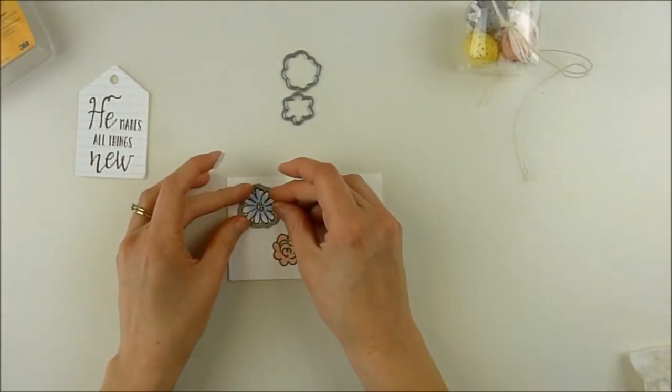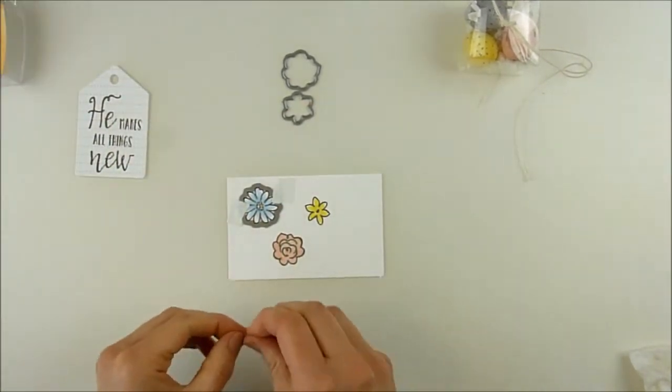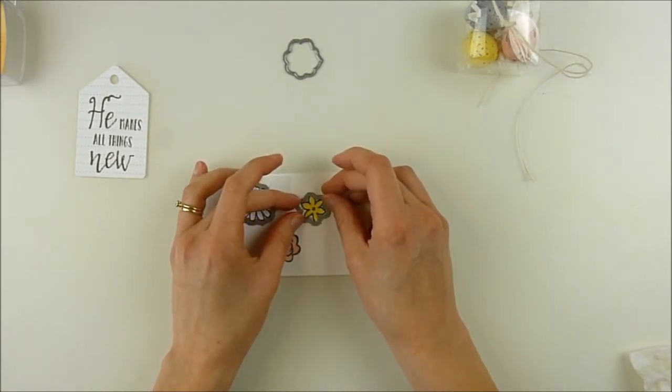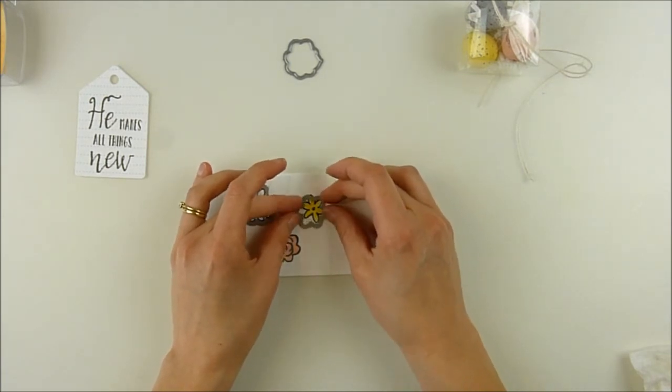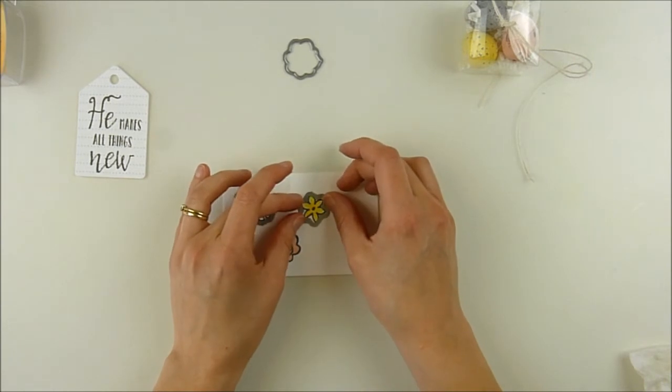Now I'm going to use the coordinating Build a Bunch confetti cuts to die cut these out. I use a little tiny bit of post-it tape just to hold them in place. I don't know why, but this little yellow one, for some reason—I wasn't being patient enough. I had a hard time getting it lined up. And it's funny because that's probably the simplest one to line up.